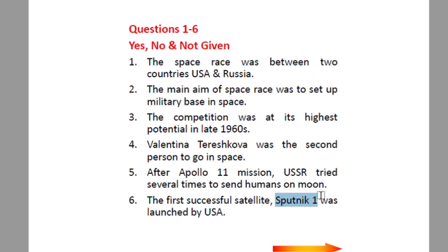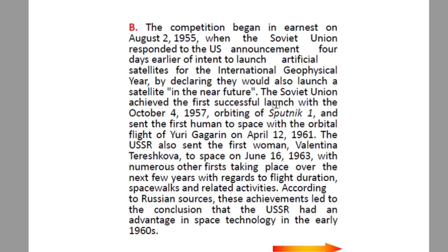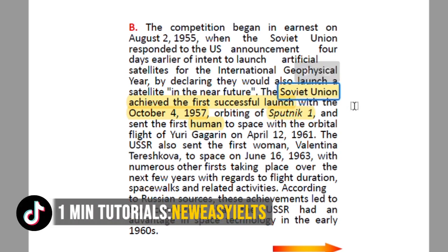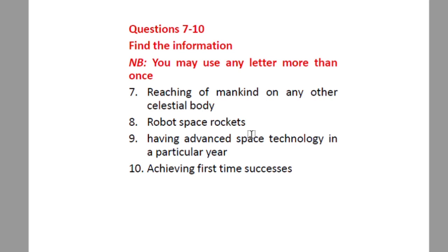Question six: 'The first successful satellite, Sputnik 1, was launched by the USA.' Keywords: Sputnik 1, launched by USA. Reading paragraph B: 'The Soviet Union achieved the first successful launch with the orbiting of Sputnik 1 on October 4, 1957.' Sputnik 1 was launched by the Soviet Union, not the USA. So the answer is No/False.